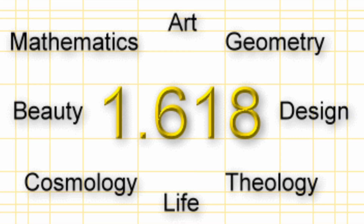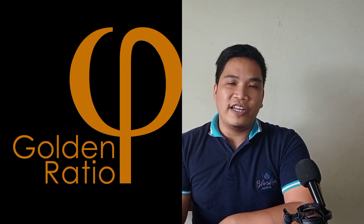Did you observe something? As you can see, as we continue the process of dividing the larger number by the smaller ones and go bigger and bigger, we can see a pattern of a consistent quotient, which is 1.618. This quotient — this 1.618 — is what we call the golden ratio.